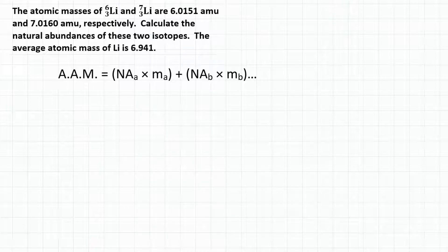Okay, so this is an average atomic mass problem, but instead of calculating average atomic mass, we are calculating the natural abundances. And the natural abundance is essentially the percentage of lithium atoms that are each isotope of lithium.